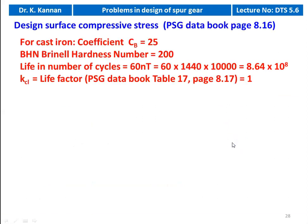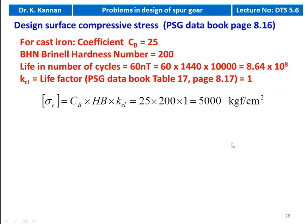We calculate the design surface compressive stress. The equation is available on page number 8.16. For cast iron, coefficient CB = 25 and pinion hardness number BHN = 200. Life in number of cycles = 60 × N × T = 60 × 1440 × 10,000 = 8.64 × 10⁸. Life factor is initially 1. So σC = CB × HB = 25 × 200 = 5000 kgf/cm².